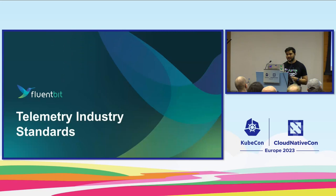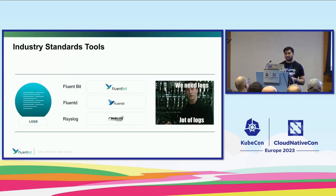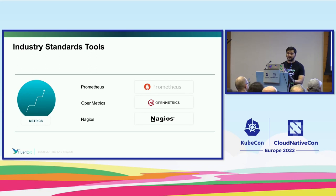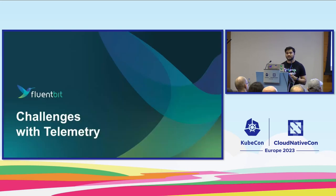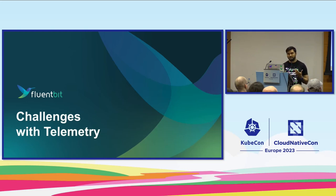We have a ton of stuff where we're continually building these different data sets. Many of these tools are going to look familiar — you have FluentBit, FluentD, R-Syslog, things that are standard out of the box. On the metric side, Prometheus, OpenMetrics, Nagios. On the tracing side, OpenTelemetry, OpenTracing. Everyone here has come to the CNCF KubeCon event — it's great to see such awesome communities building on top of each of those different pillars of observability.